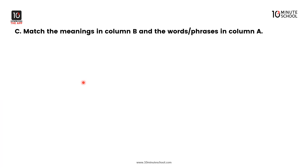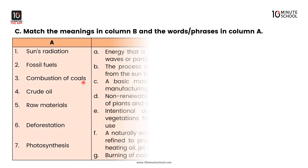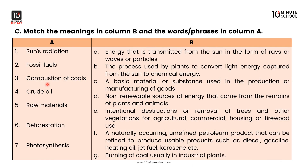Now we have a matching exercise. Match the meanings in column B with the words or phrases in column A. Column A contains: sun's radiation, fossil fuels, combustion of coal, crude oil, raw materials, deforestation, and photosynthesis.